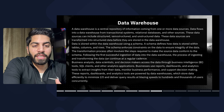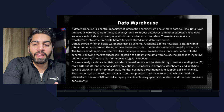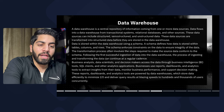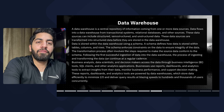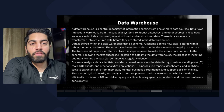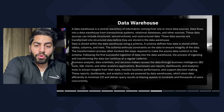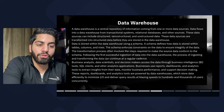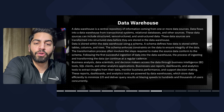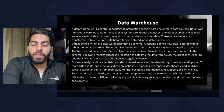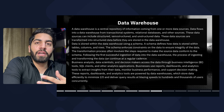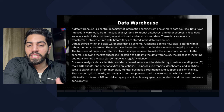Data is stored within the data warehouse using a schema. A schema defines how data is stored within tables, columns, and rows. The schema enforces constraints on the data to ensure data integrity. The transformation process often involves steps required to make source data conform to the schema — we get data in different forms, transform it, apply different processes, and after processing it conforms to the schema. The ingestion and transformation process continues at a regular interval as new data arrives.